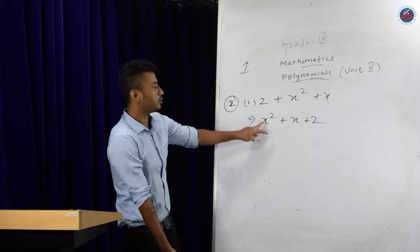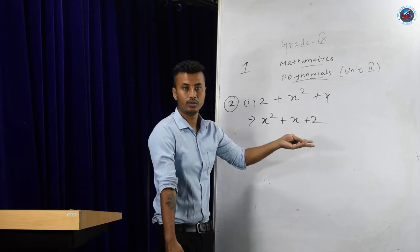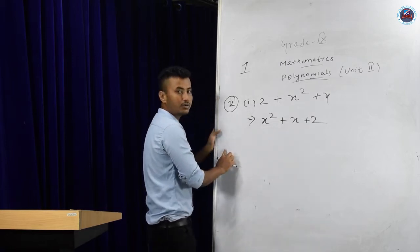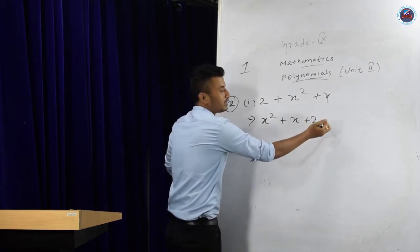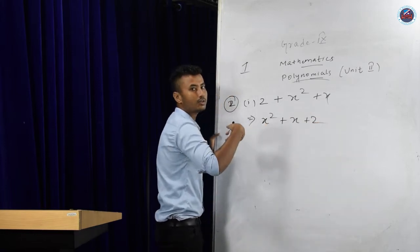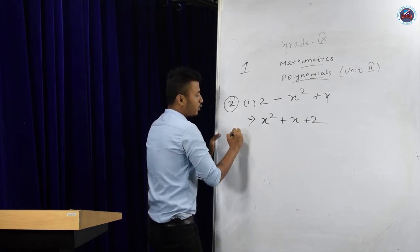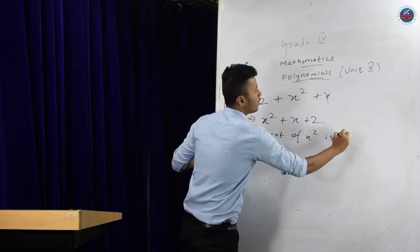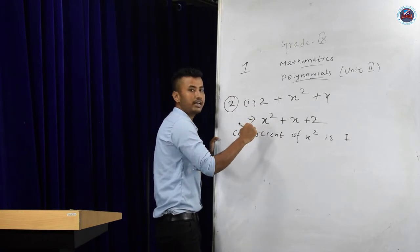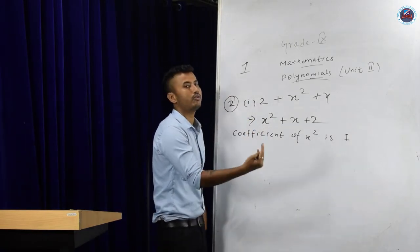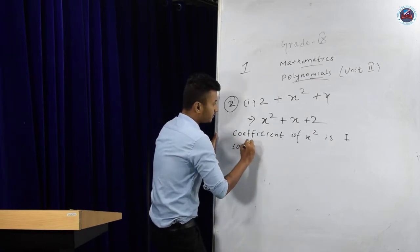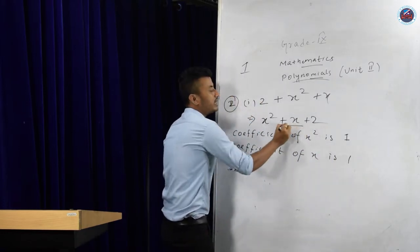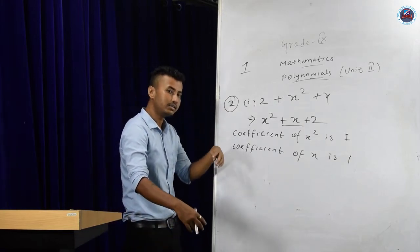Rewritten in proper form: x², x¹, and the constant 2 — x to the power 0. It is now in descending order. The coefficient of x² is 1 — because no number is written in front of x², we take it as 1. The coefficient of x is also 1, since no number is written in front of x either. This is your answer for question 2, part 1.